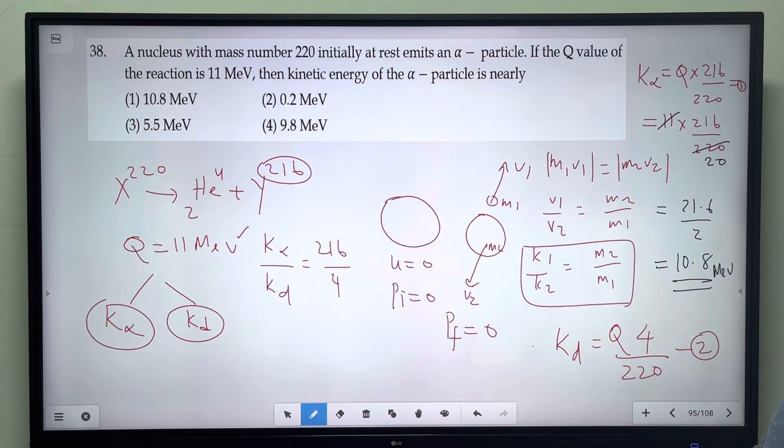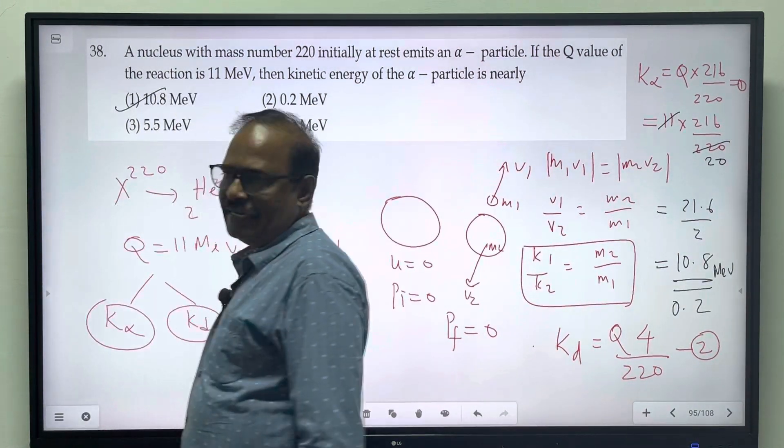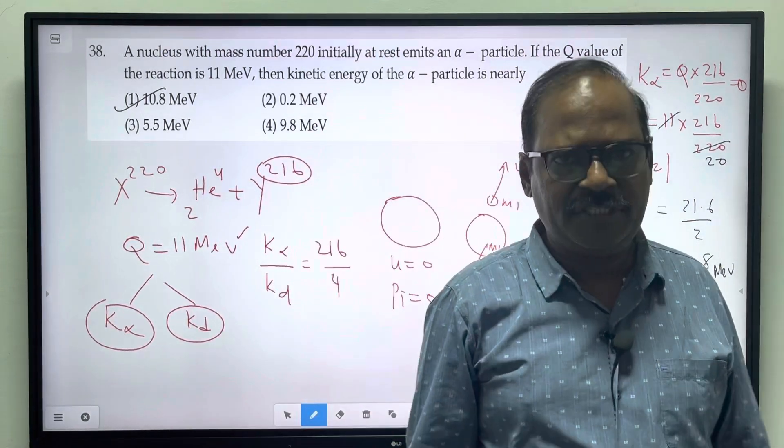So the alpha particle energy compared to daughter nucleus is 0.2. So 10.8 mega electron volt is the answer. Thank you.